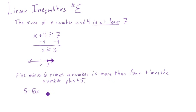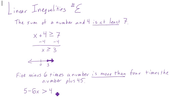'Is more than' means it needs to be bigger. The 'is' shows we have two sides being compared. If it said equal to, it would be an equal sign. But this needs to be more than four times the same number — and again, multiplication is higher order in PEMDAS — plus 45. From there we should be able to solve. I'm going to subtract the five to the other side.